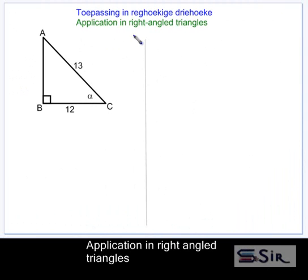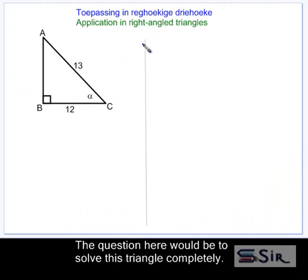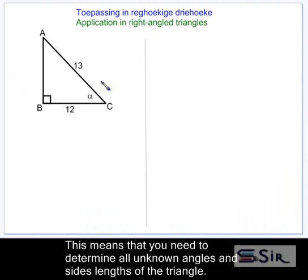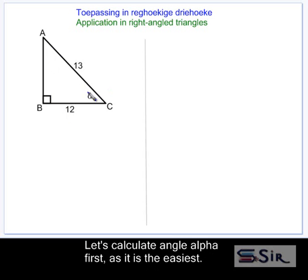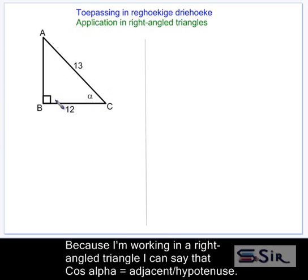Applications in Right-Angled Triangles. The question here would be to solve this triangle completely. This means that you need to determine all unknown angles and side lengths of the triangle. Let's start by calculating angle alpha first, as it is the easiest.